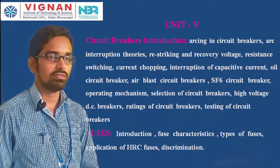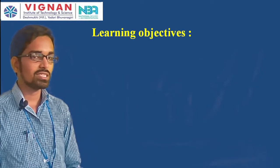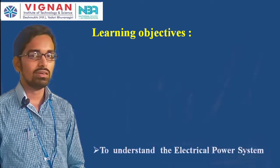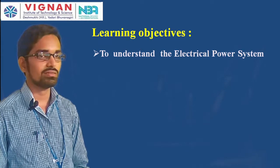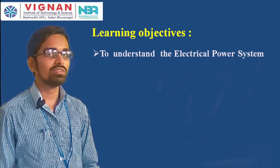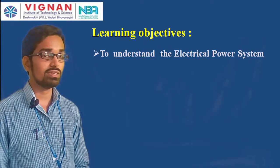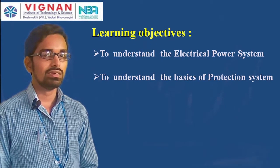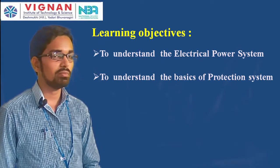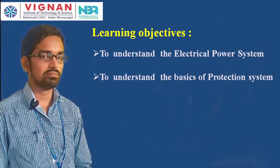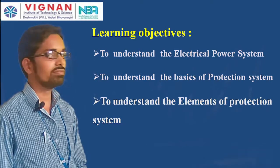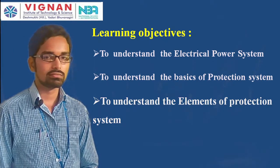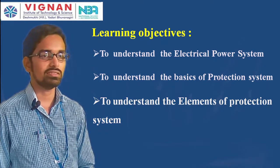The learning objectives of Unit 1, Lecture 1 are: to understand the electrical power system and the need for protection of different power system equipment; to understand the basics of the protection system; and to understand the elements of the protection system.